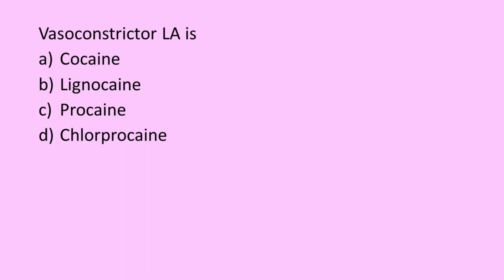If you have listened to this topic properly, you will definitely answer this question. Which is the vasoconstrictor local anesthetic agent? Option A: cocaine. Option B: lignocaine. Option C: procaine. Option D: chlorprocaine.